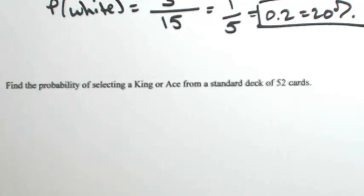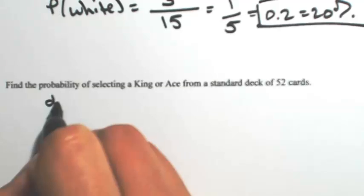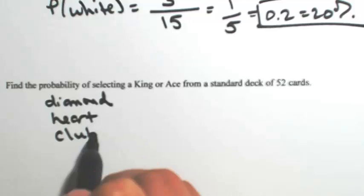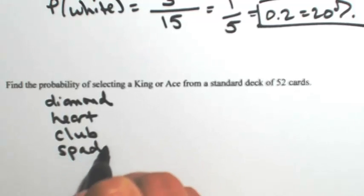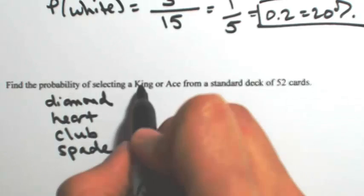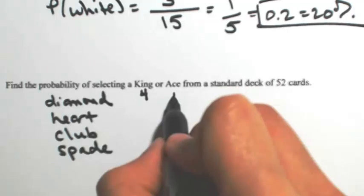If you look at a standard deck of cards, there are four suits: diamond, heart, club, and spade. Each card has four of each. So a king has four, and an ace also has four.